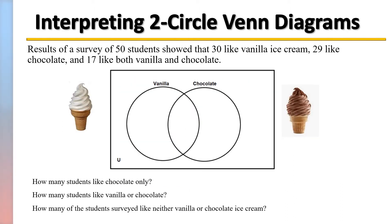The results of a survey of 50 students showed that 30 like vanilla ice cream, 29 like chocolate, and 17 like both vanilla and chocolate. Pause the video and see if you can answer: how many students like chocolate only, how many of those 50 students like vanilla or chocolate, and how many like neither vanilla nor chocolate? When you're ready, press play to continue.